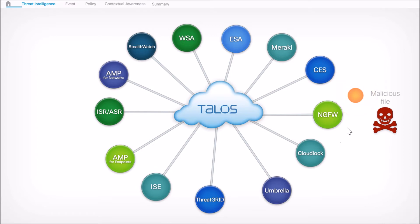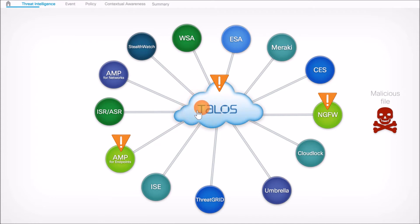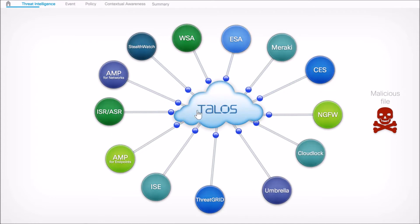A file might traverse a next-gen firewall, giving us an opportunity to mitigate the risk and send that file for additional analysis, sharing that insight with Talos. Likewise, that information is shared with AMP for Endpoints to mitigate the risk there as well. We also share that information with all products within the portfolio to further mitigate risk.